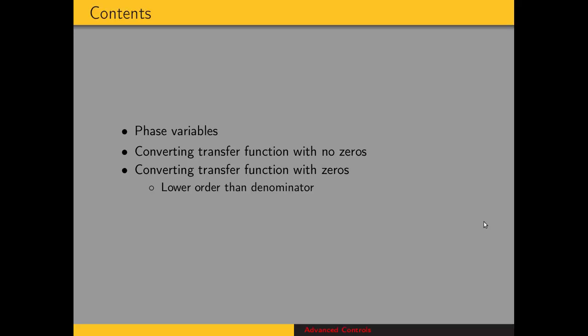The outline of this video is that we'll start with phase variables, an introduction to what they are. Then we will dive into converting transfer functions to state space representation — first for a transfer function with no zeros, and then secondly we'll consider transfer functions with zeros, as long as there are fewer zeros than there are poles.